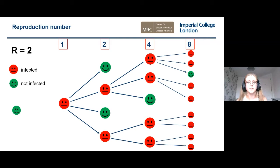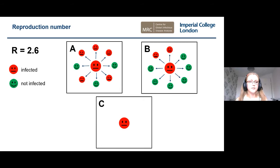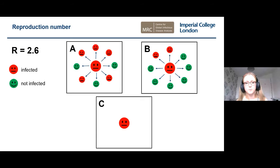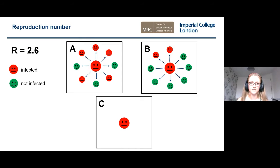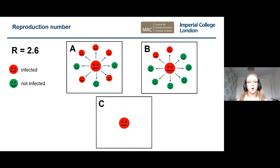An important thing to note about the reproduction number is that it is an average. For example, let R equal 2.6 — because there's no reason for it to equal a whole number. In reality a person can only infect one, two, or three other people — you cannot infect 0.6 of a person. But we're taking an average over the whole population. This also means with R of 2.6, somebody like person A could infect five other people, person B infects two, and person C doesn't infect anybody — perhaps because they stayed home when sick. Because we're taking an average, these details don't matter as we're looking at the whole population level.